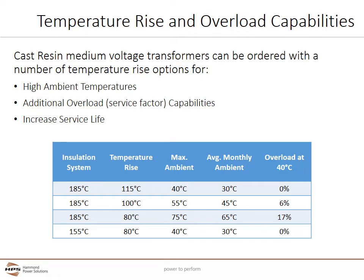This chart shows the various temperature rise options with cast resin transformers. Cast resin transformers have fewer options for dealing with high ambient temperatures and offering overload options. The IEC cast resin style for the most part doesn't offer a low temperature rise option. Like VPI, adding low temperature rise options will allow the transformer to run cooler over its lifetime and increase its service life. UL style cast resin transformers offer continuous overloads of up to 17% and can deal with ambient temperatures up to 75°C.